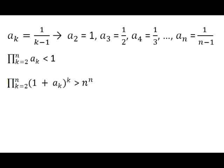One last detail. We saw earlier that for each individual term, equality could be reached if and only if a_k equals 1 over k minus 1. So for total equality, a_2 must equal 1, a_3 must equal 1, and so on for all terms. This proves that the overall inequality is strict: the left side is strictly greater than n to the n.